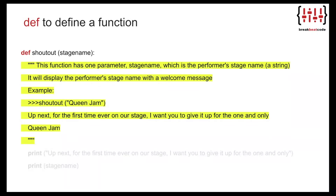Just below we have something called a doc string, highlighted in yellow here to make it easier to read. The doc string is the documentation for the function — simply a description of the function, its parameters, and the actions it takes when we call the function. It also includes an example of what the function would do with a specific argument. The triple quotation marks indicate to the Python interpreter that this is a doc string and not Python code — in other words, it ignores this text. For example, if we call 'shout_out' with 'QueenJam' in quotation marks, the display will show: 'Up next for the first time ever on our stage, I want you to give it up for the one and only QueenJam.'